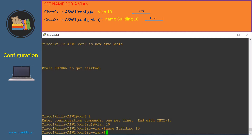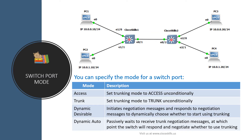This allows us to recognize that VLAN 10 is set for building 10. Before going into the next configuration task, let's talk about switchport modes. You can specify the mode for a switchport as an access port — when you make a port an access port it declares 'I do not want to become a trunk, connect me to a PC or a network device.' Or you can specify the mode as a trunk port, which declares 'I want to become a trunk, connect me to another switch.'